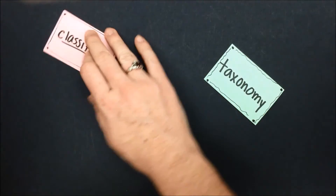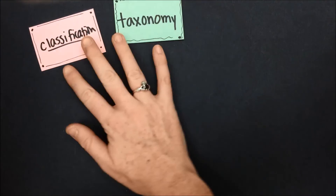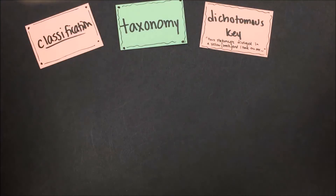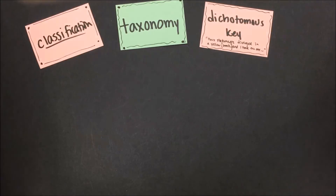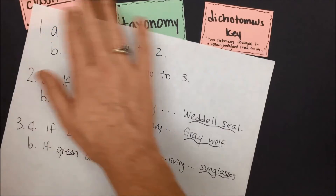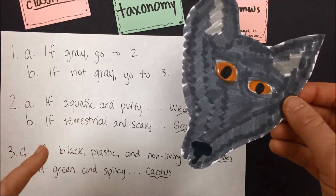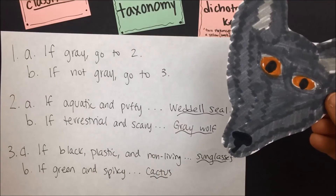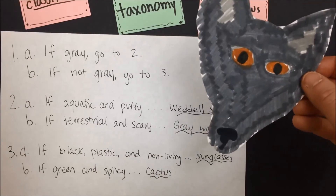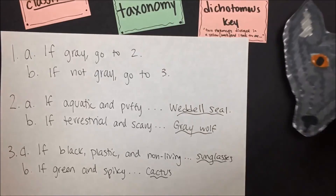One of the important classification and taxonomy tools we learned about in this unit was the dichotomous key. A dichotomous key uses a series of paired statements or questions to narrow down possibilities and reach an identification of a certain organism. Here's an example: if the organism is gray, go to step two. If aquatic and puffy, it's a wettle seal. If terrestrial and scary, it's a gray wolf. Following the key, this organism is a gray wolf.